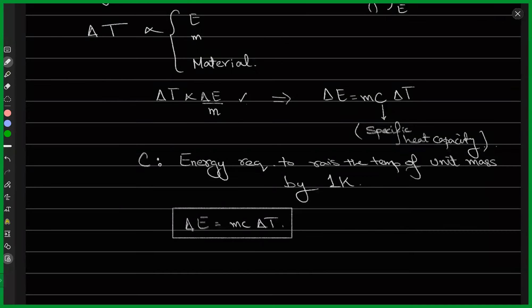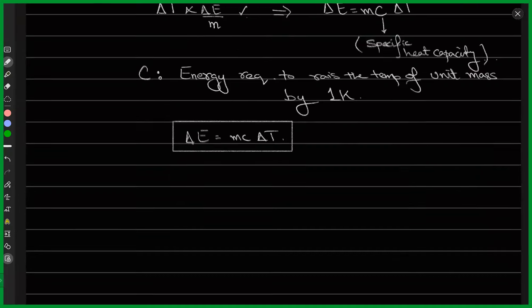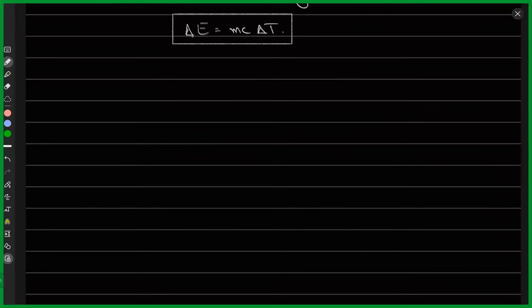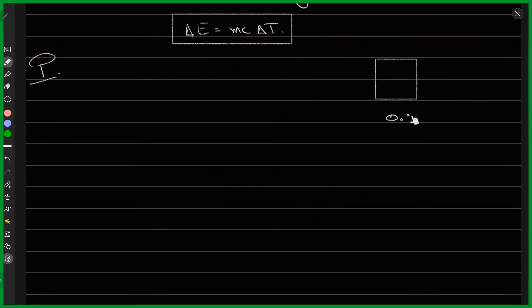Let's do an example to see if specific heat capacity is really clear. Suppose that you have a metal — a block of metal — and its mass is 0.5 kilograms.